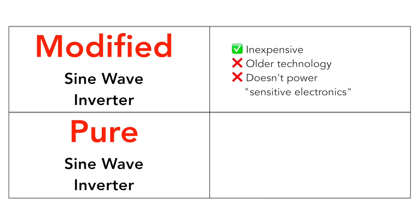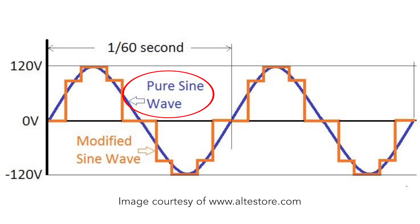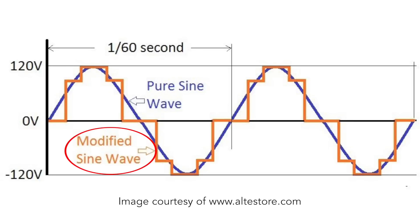These pure sine wave inverters are much more expensive than the modified sine wave inverters, but they deliver a more realistic, home-like experience when it comes to delivering AC power to your appliances. I'm going to pop up a graph here to show you the difference between the two. That smooth line going from a high of 120 volts to a low of negative 120 volts is your pure sine wave. The modified sine wave graph is a more jagged, stair-stepping way of delivering the energy, which is why it's not meant to power sensitive electronics that can be damaged by those variations.